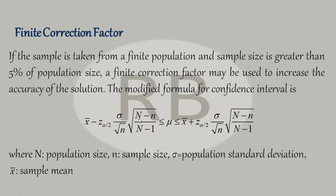Capital N here is the population size, small n is the sample size, sigma is the population standard deviation, and x-bar is the sample mean. This formula is used when sigma is known, population size is known, and the sample size is more than 5% of the population size.